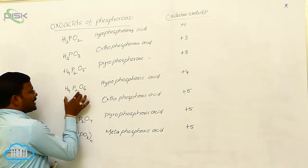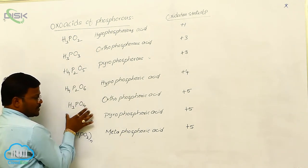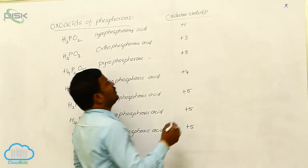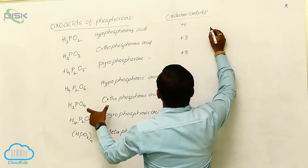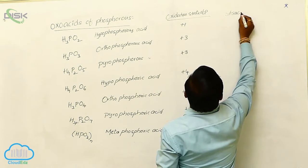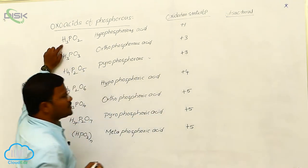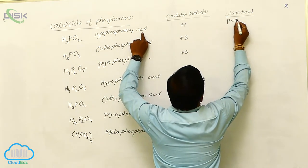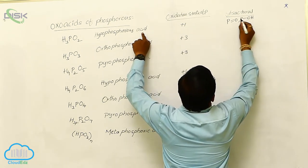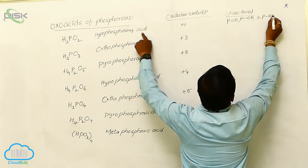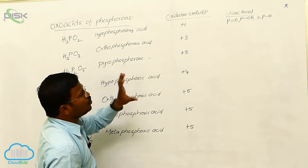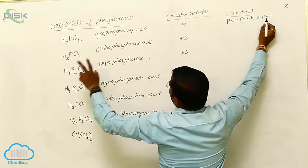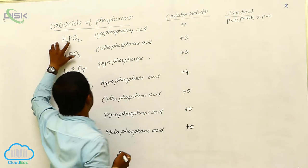Now identify the names, molecular formulas, and oxidation states of phosphorus in these oxoacids. Regarding structural aspects: in Hypophosphorous Acid, there is one P double bond O, one OH (P-OH), and two P-H bonds present. The total count must equal the molecular formula — one phosphorus, two oxygens, three hydrogens — giving H3PO2.